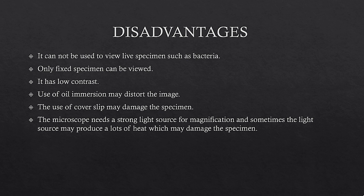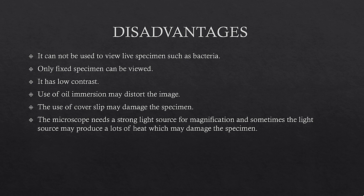Only stained specimens can be viewed. It has low contrast. Use of oil immersion may distort the image. The use of a cover slip may damage the specimen. The microscope needs a strong light source for magnification, and sometimes the light source may produce a lot of heat which may damage the specimen. These are the disadvantages of bright field microscopy.